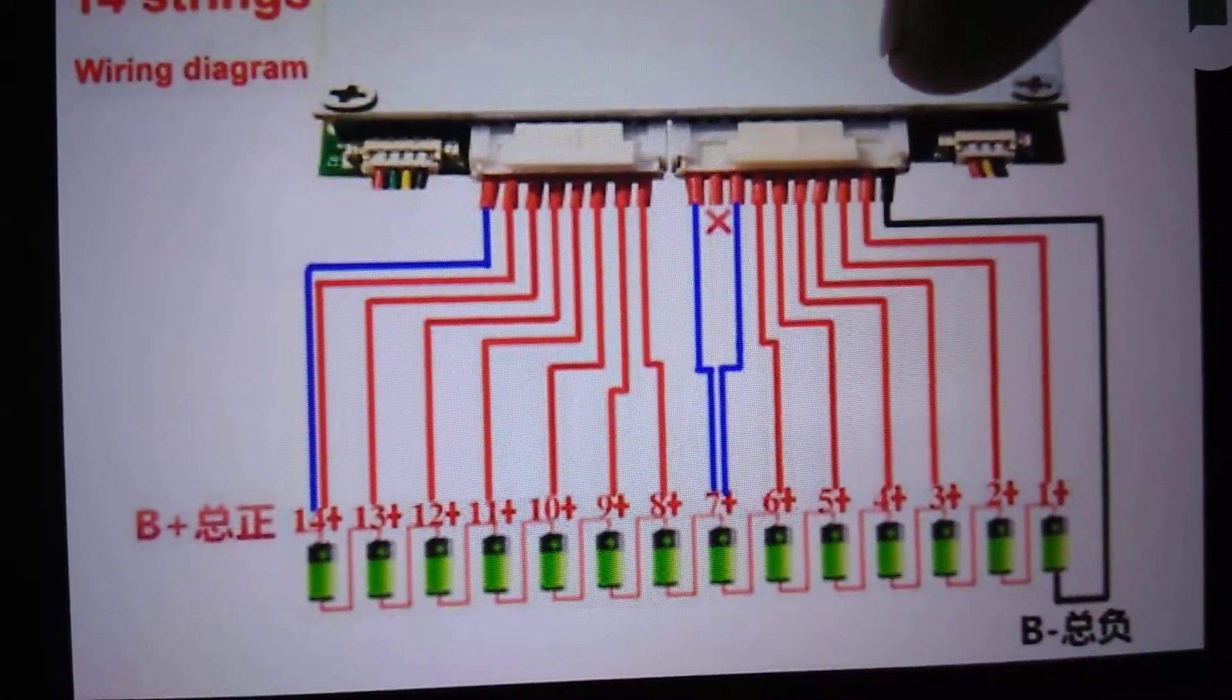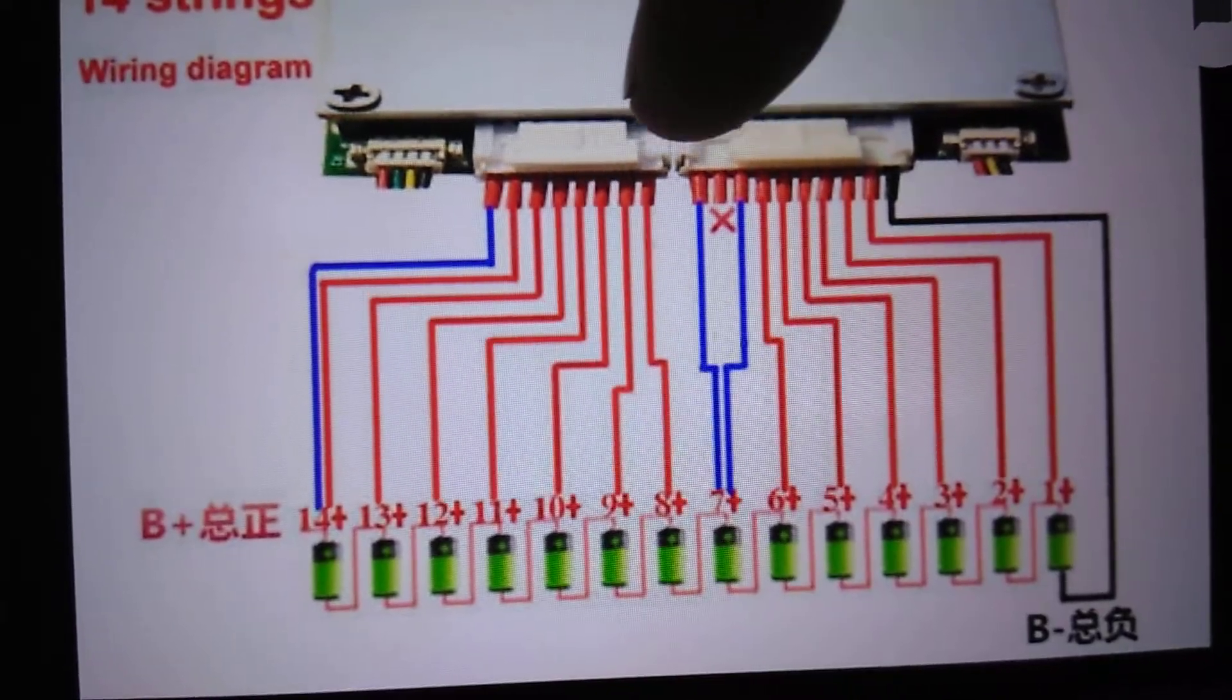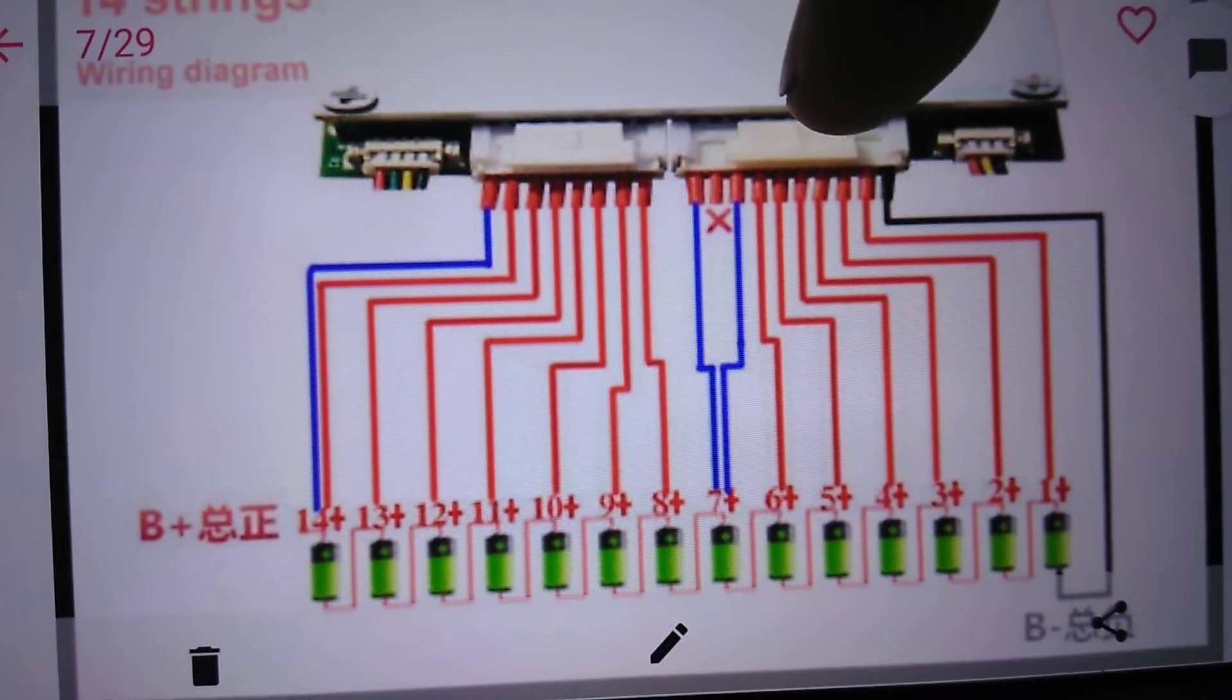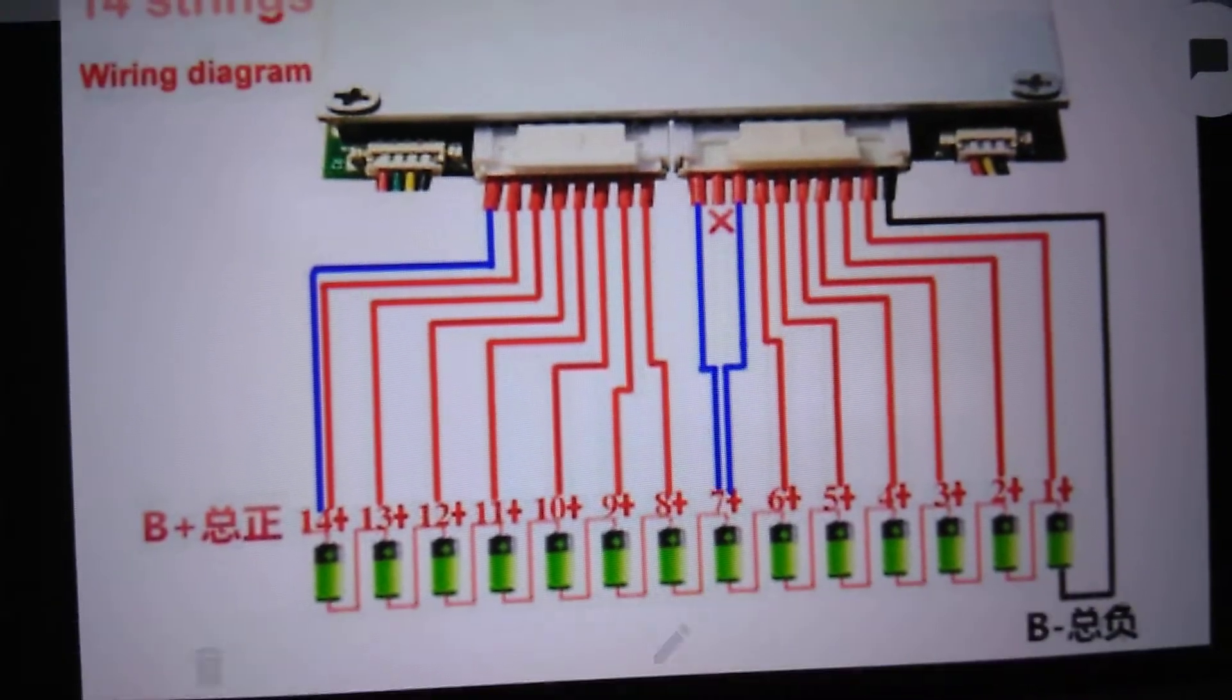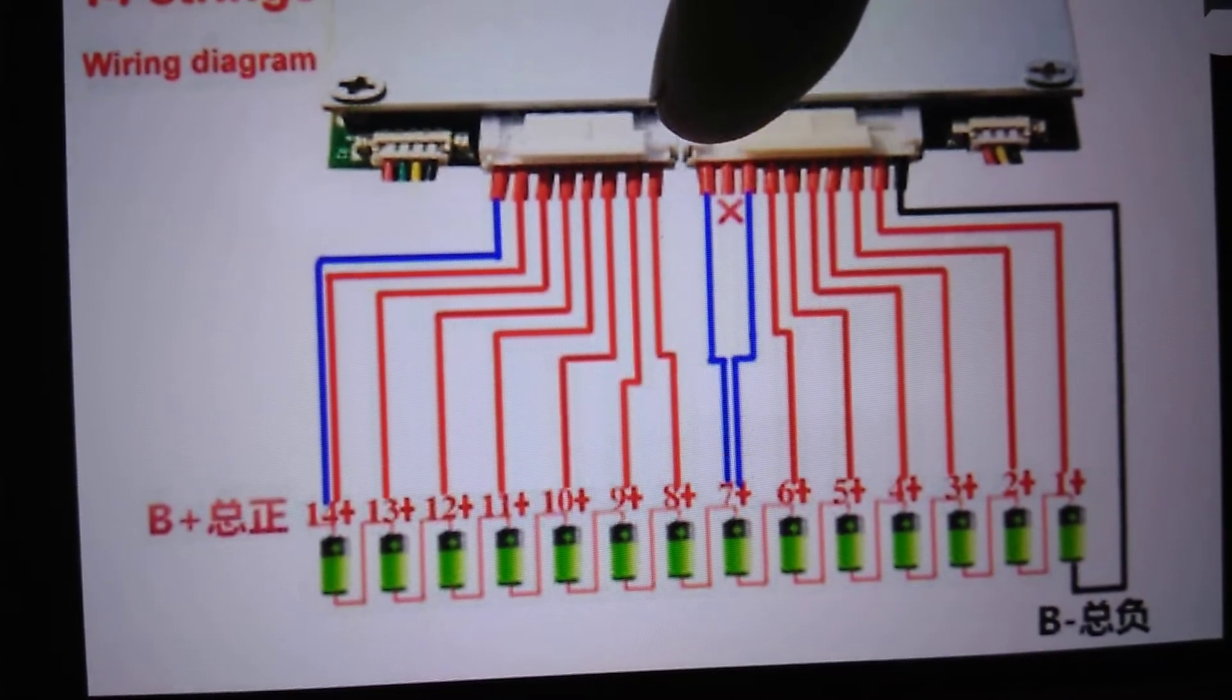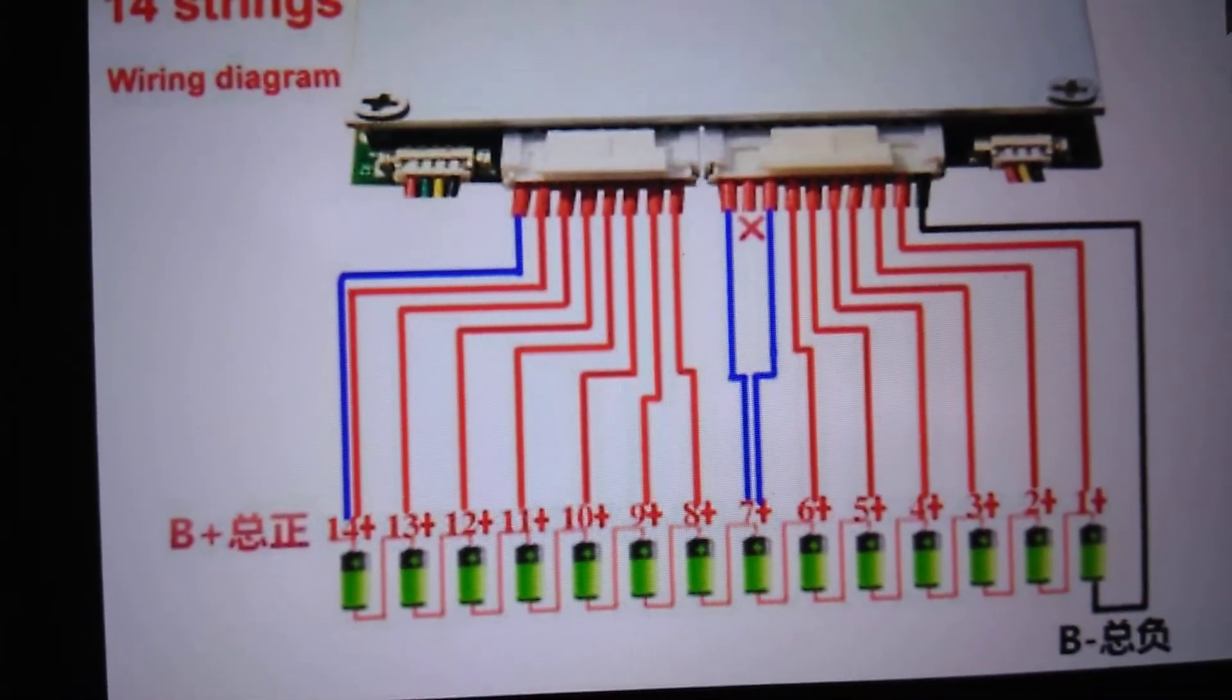But when I wire this up in an 8S, one blue wire is on this plug, and one blue wire is on this plug. So I'm wondering, instead of putting this blue wire here, if I need to move it over to this one.